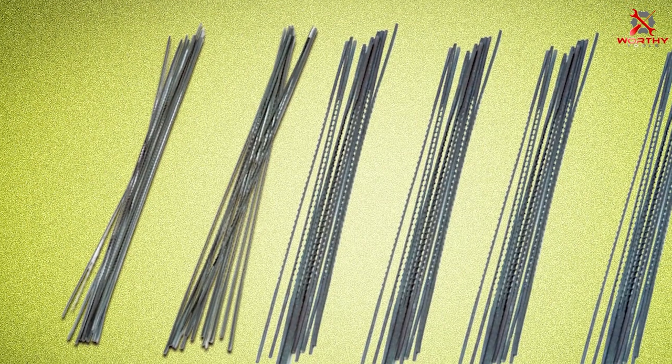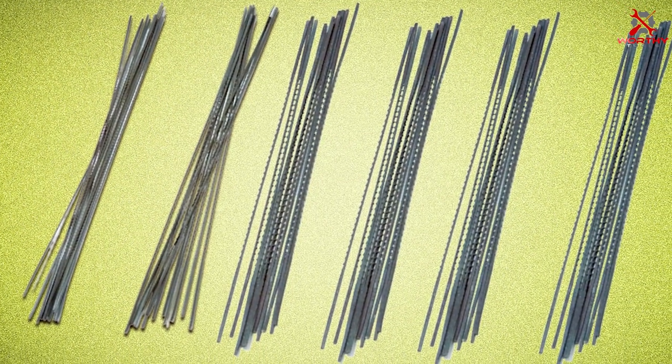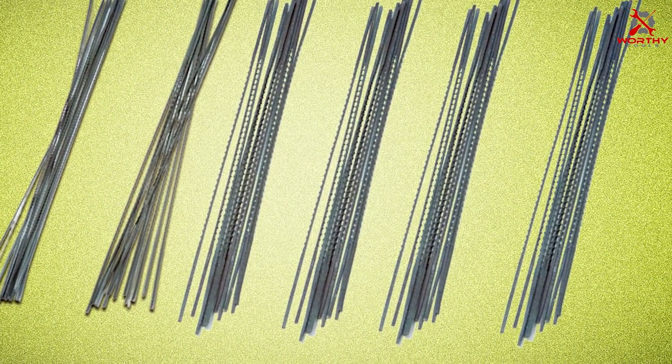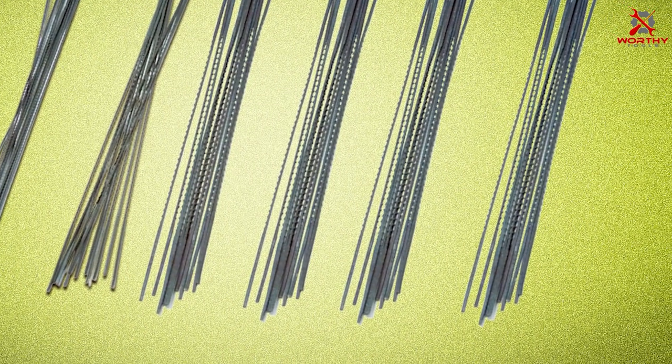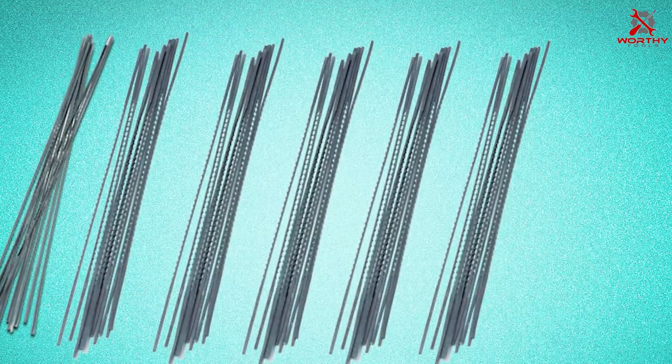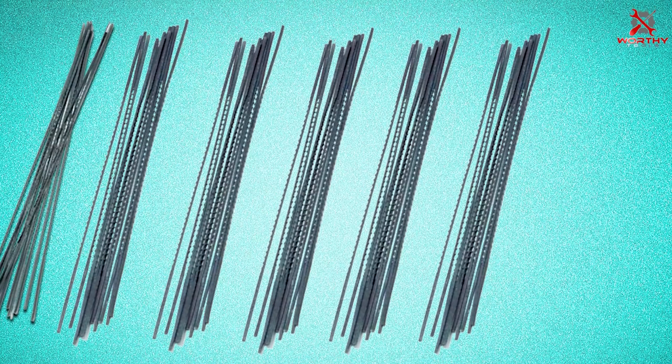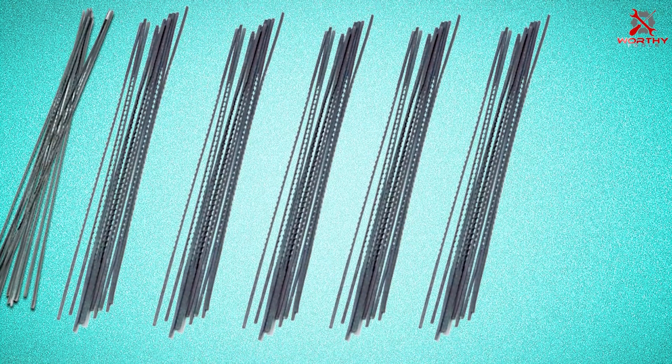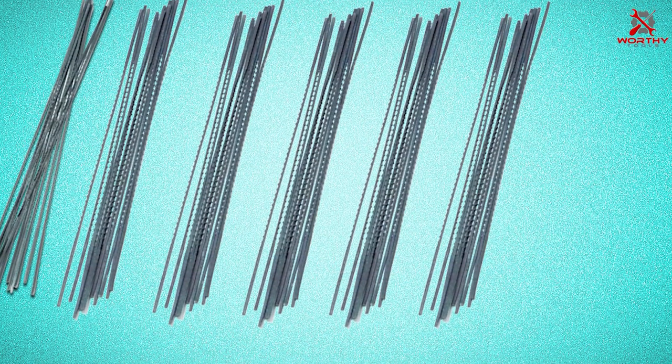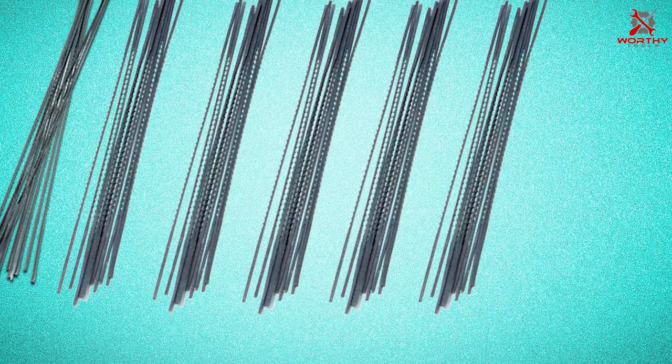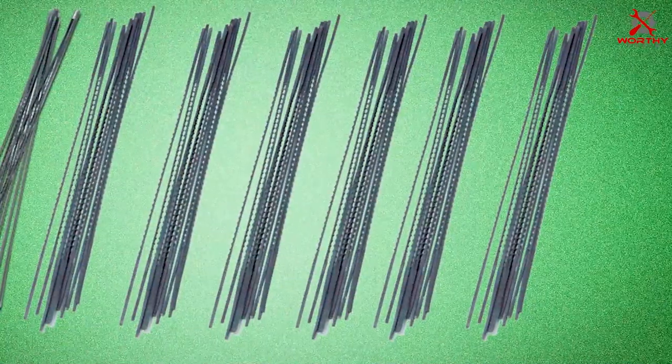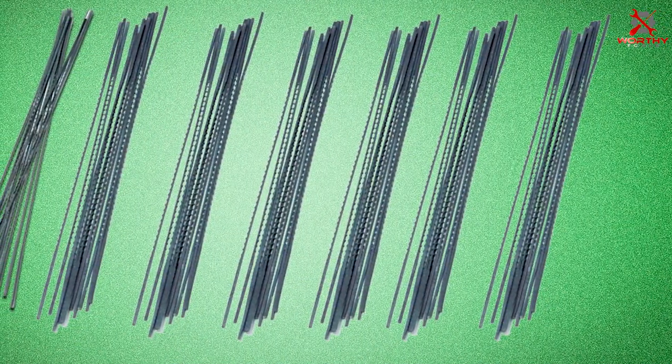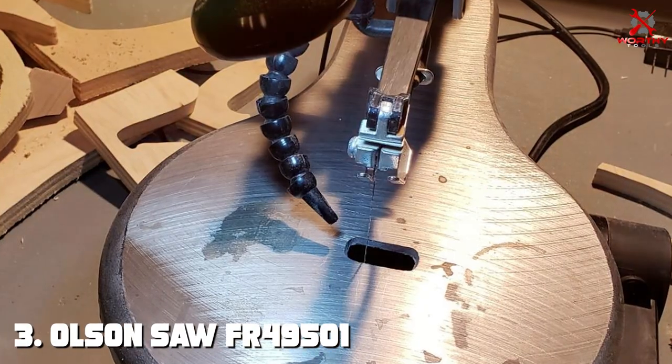Constructed from high-grade steel, these blades are not only sharp but also remarkably durable, capable of withstanding extensive use without diminishing in performance. The assortment encompasses a variety of sizes, enabling woodworkers to adeptly navigate through an array of projects from intricate fretwork to more substantial pieces. Olsen Saw's dedication to quality shines through in this collection, making it an indispensable asset for those in pursuit of excellence and reliability in their woodworking endeavors.